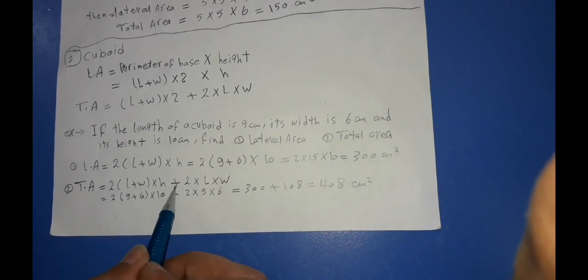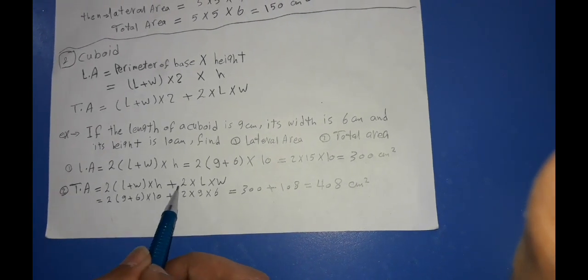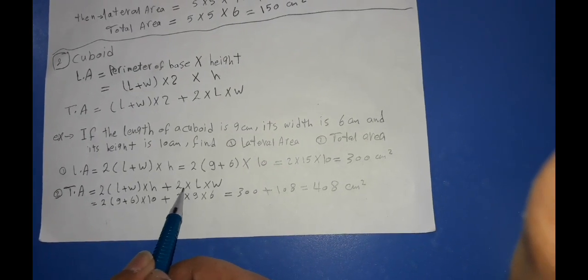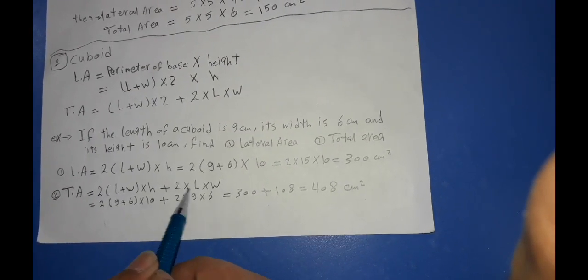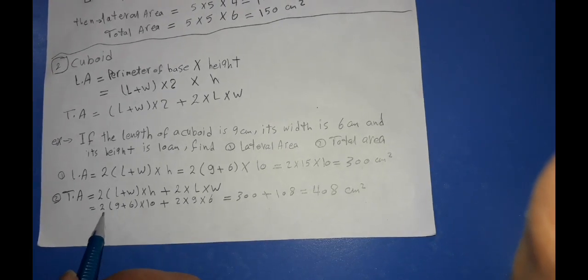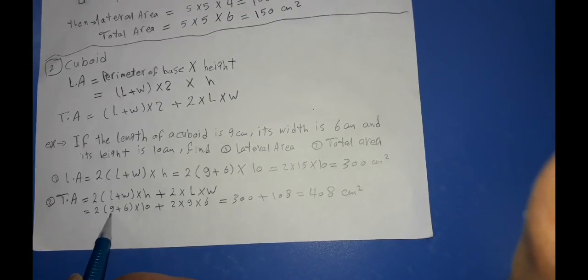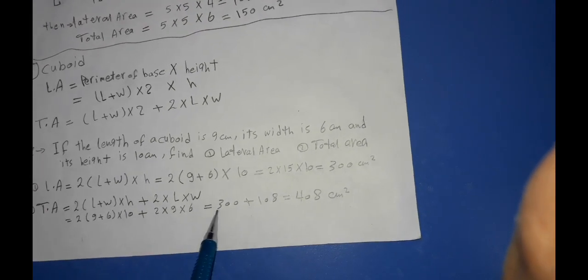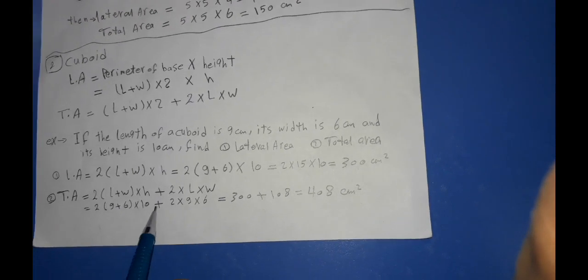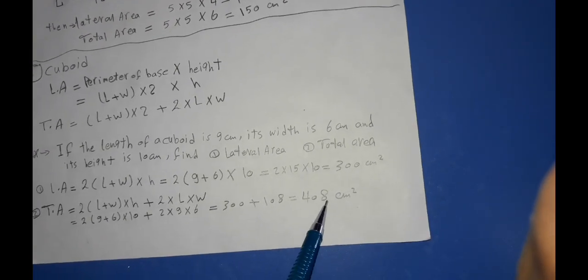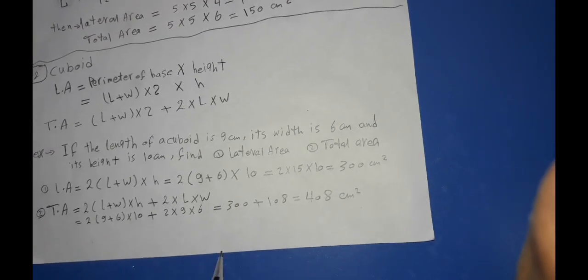And to find the total area: 2 × (length + width) × height + 2 × length × width = 2 × (9 + 6) × 10 + 2 × 9 × 6 = 300 + 108 = 408 cm². Thank you.